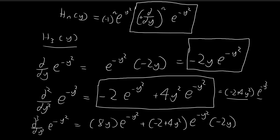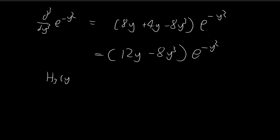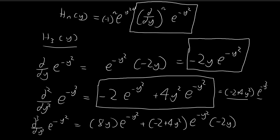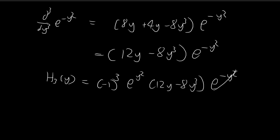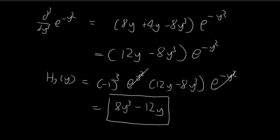Now we're ready to apply the formula to find the third Hermite polynomial. H3 of y equals negative 1 to the power of 3, times e to the power of y squared, multiplied by the third derivative. The exponentials cancel out, and negative 1 to the power of 3 equals negative 1, so we get 8y cubed minus 12y. This is our third Hermite polynomial.